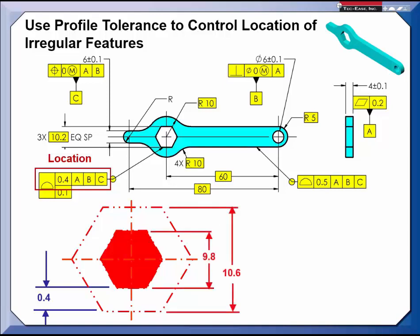Without the lower segment, the size and form can vary within the 0.4 mm tolerance zone. As you can see, with that much variation, it would be difficult for the feature to fit over the head of a bolt.